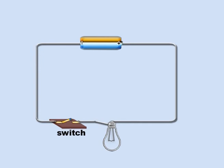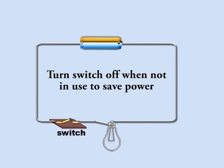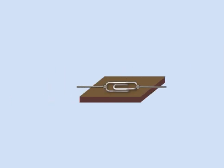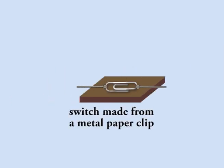A switch is a useful device to include in a circuit, because it allows you to turn things on or off, and so prevent a battery going flat. You can make a simple switch out of a metal paper clip.